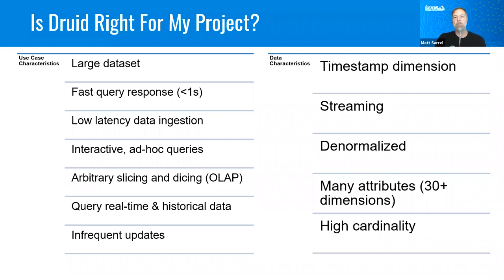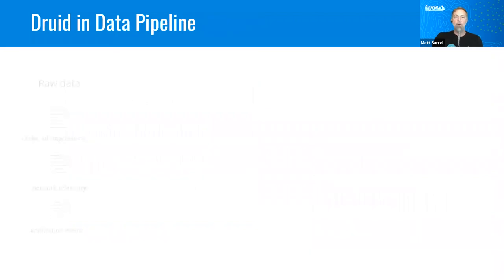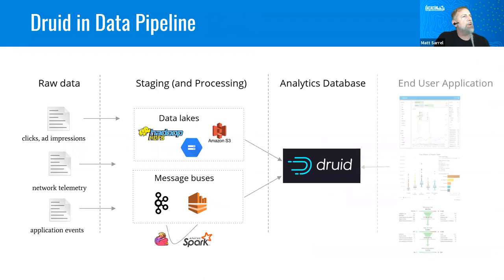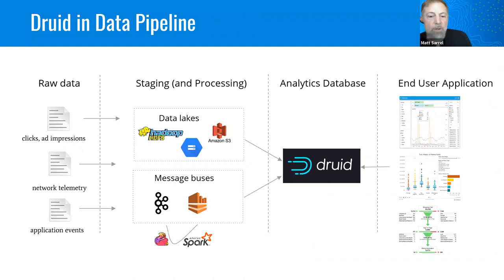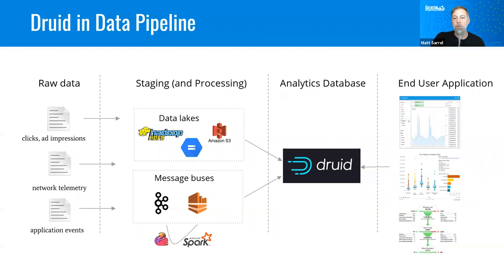You need a timestamp. The data should be denormalized — you can do joins, but you can't really do big joins. Basically, the way people use Druid: Druid is taking the raw data, staging it, and then providing it to Druid. A lot of what I've seen is Kafka, Kafka and Spark, KSQL — feeding into Druid as an analytics database — and then building the application or exposing the data to a BI tool through Druid.